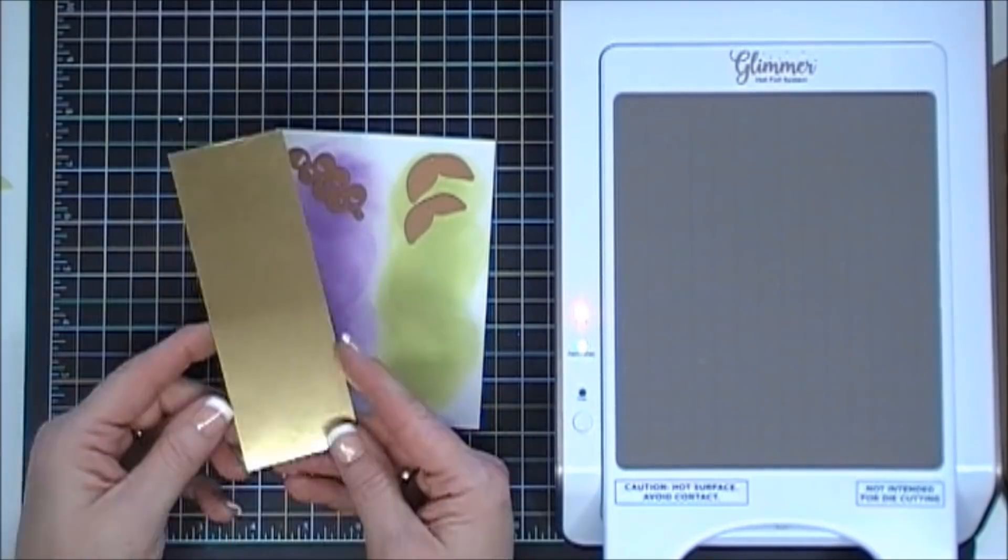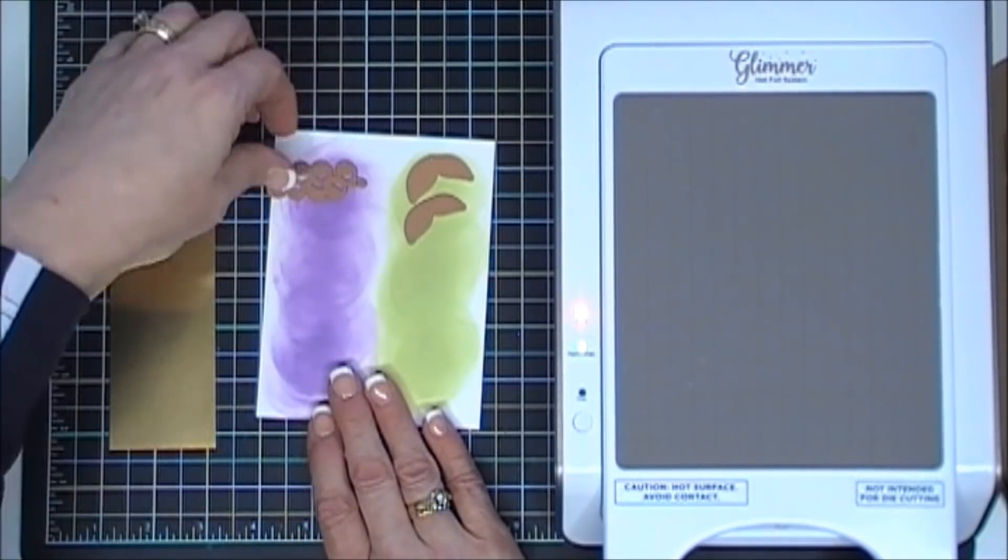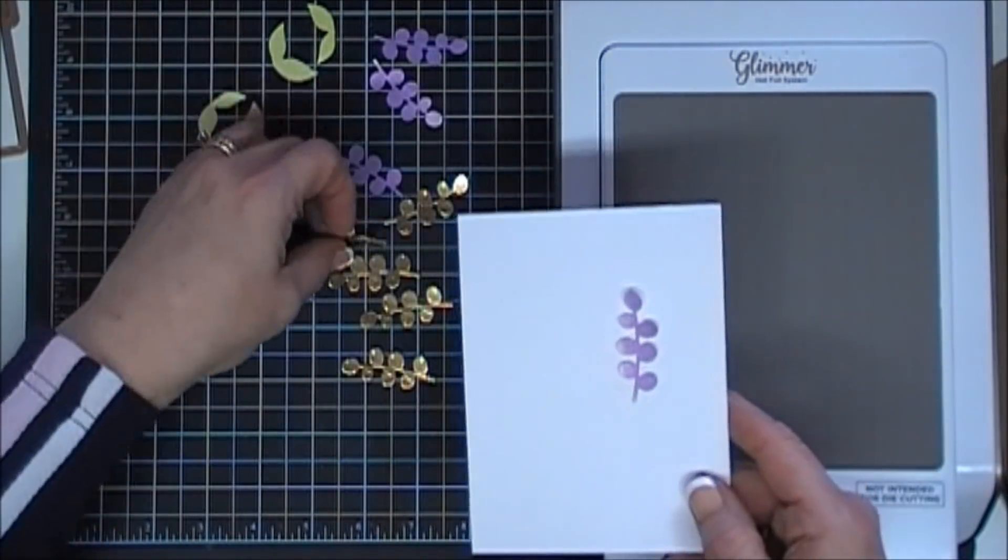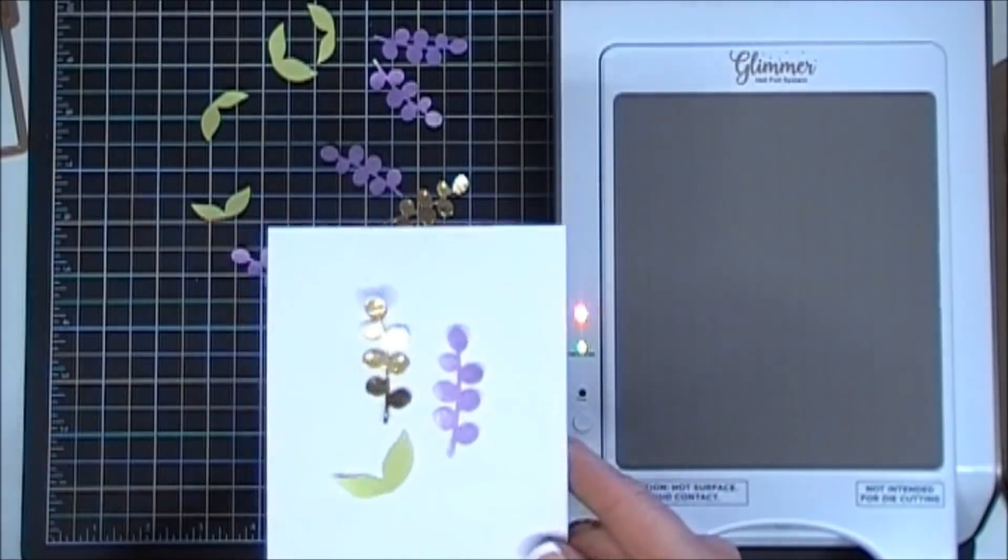I'm going to cut out a few leaves and then a few of the flourish with the purple. And then I'm also going to bring in some gold cardstock. I'm going to cut out a few gold flourishes also, so we're ready to go.